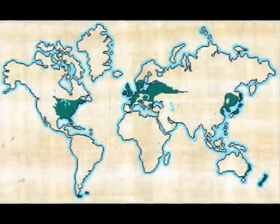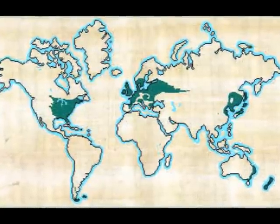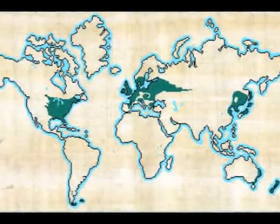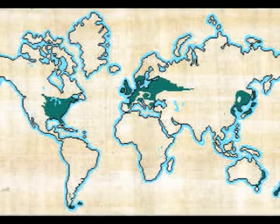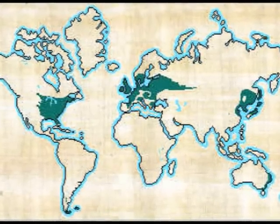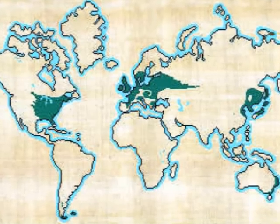Welcome to the world of the temperate deciduous forest. Before we begin, let's find out where we are exactly. Looking closely at the biome map below, you'll see that the temperate deciduous forests are located primarily in the eastern half of the United States, Canada, Europe, and parts of Russia, China, and Japan.